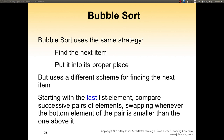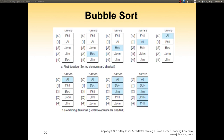Now let's talk about another sorting algorithm called bubble sort. Bubble sort uses a similar strategy as selection sort — it finds the next item and puts it into its proper place — but uses a different approach to finding that next item. Instead of starting with the first one, it starts with the last element in the array and compares successive pairs of elements, swapping them whenever the bottom element of the pair is smaller than the one above it.